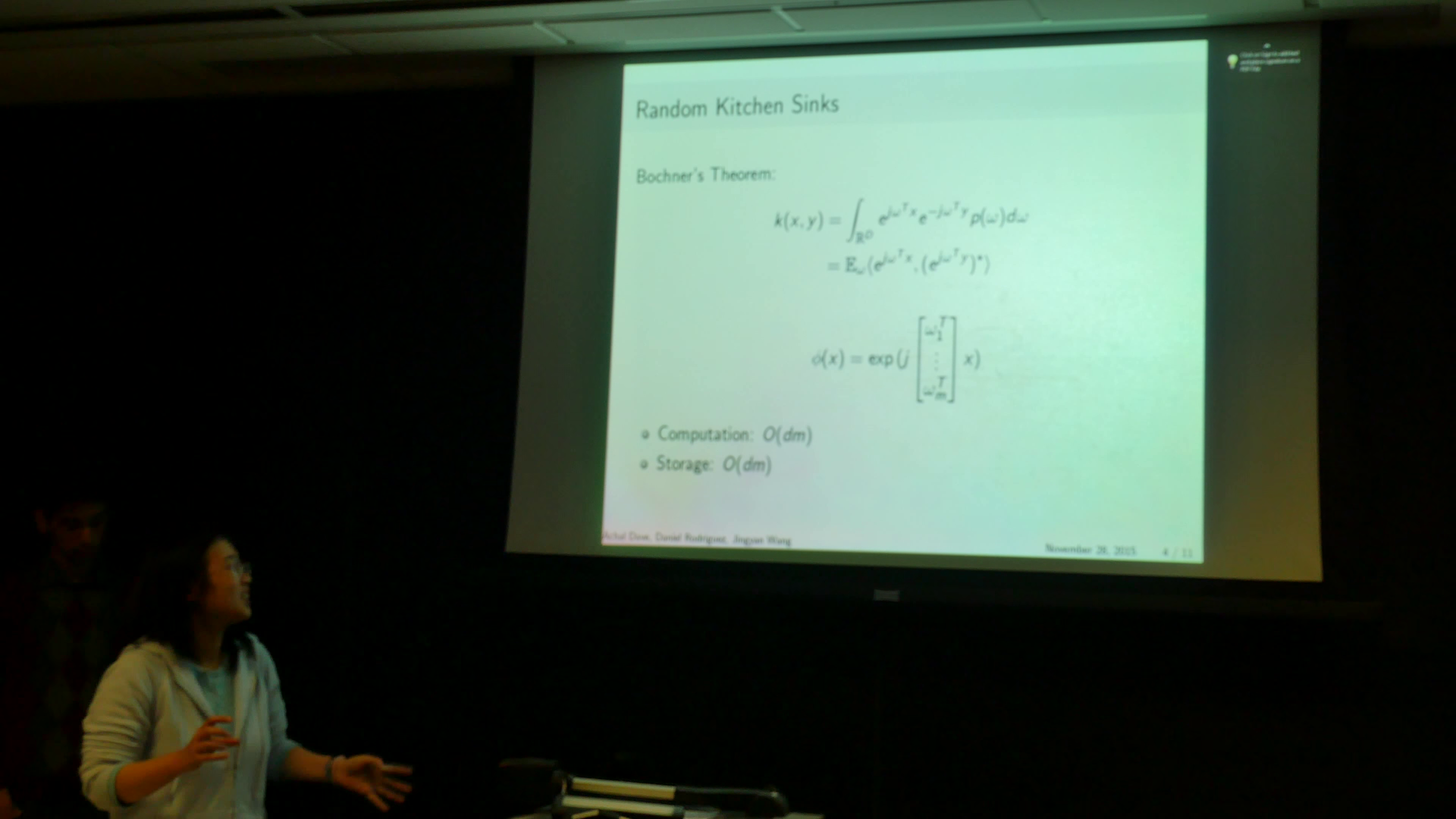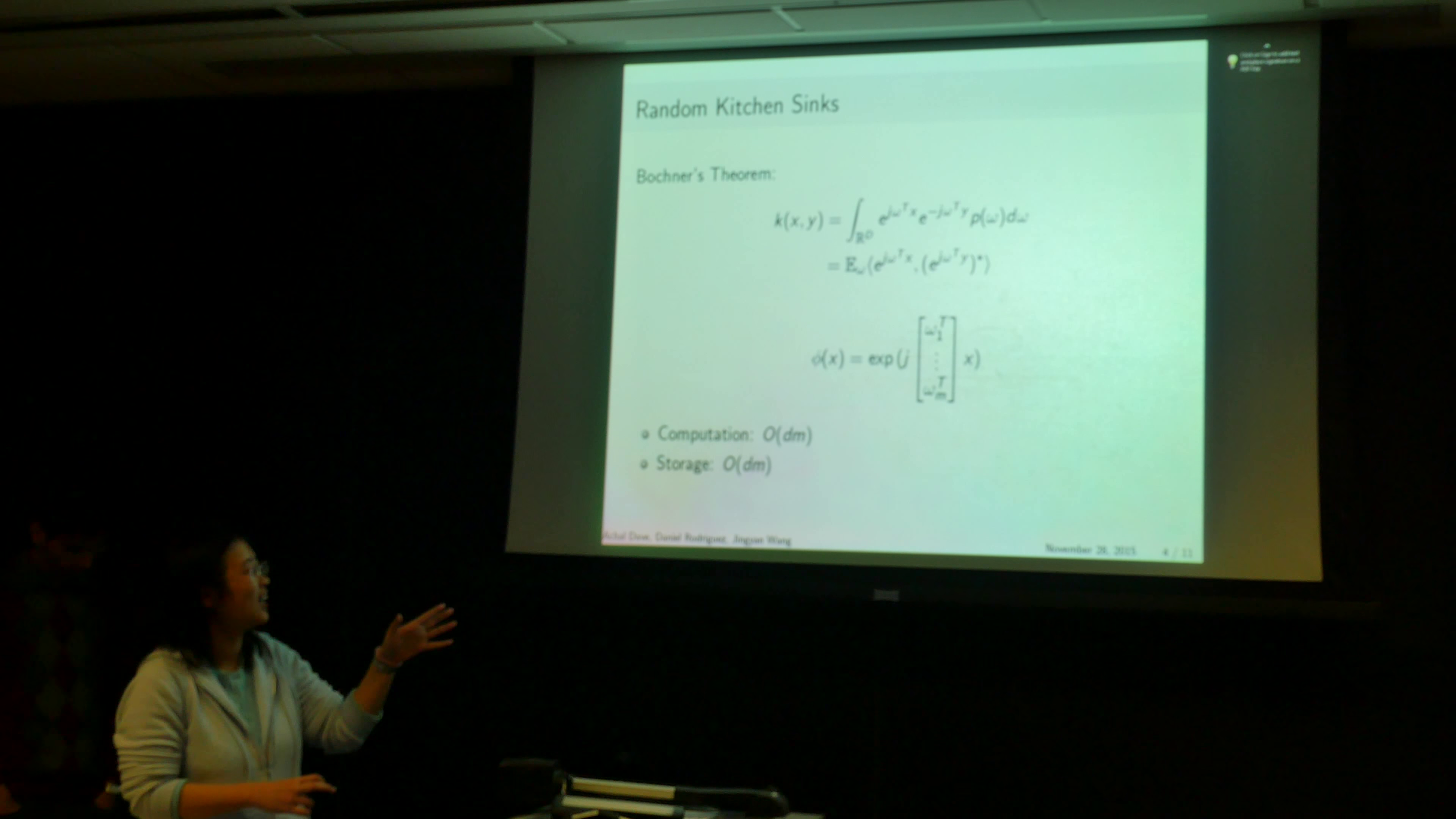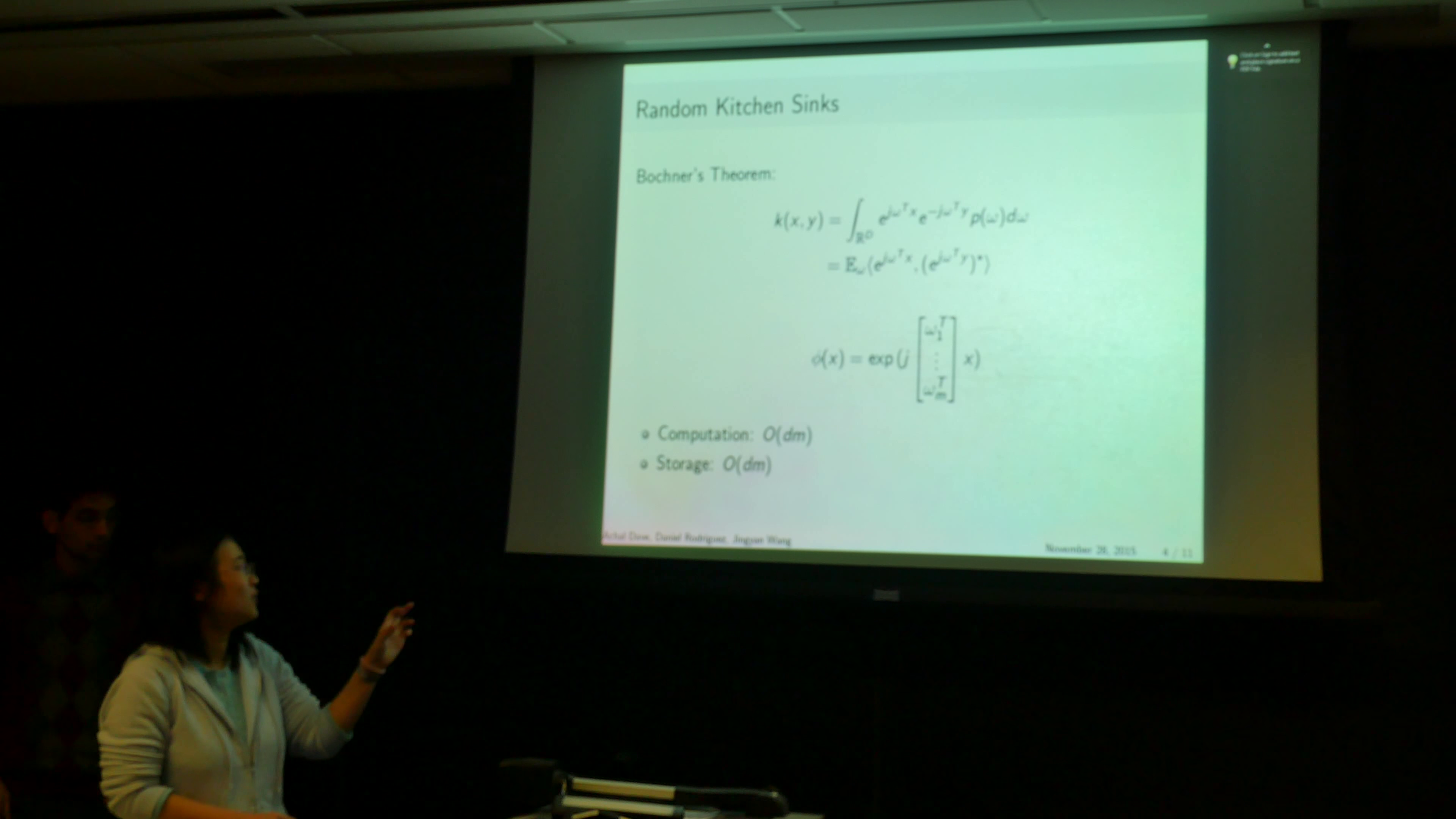And random kitchen sinks tries to solve this problem by approximating the inner product with inner product of finite dimensional vectors. So by Bochner theorem, the kernel can be considered as a Fourier transform of a probability measure, which turns out to be the expectation of the inner product of the exponential of omega transpose x, omega transpose y, under the probability measure omega. And the main idea of random kitchen sinks is that instead of computing this expectation, we take samples of omega and approximate this expectation by the empirical average.